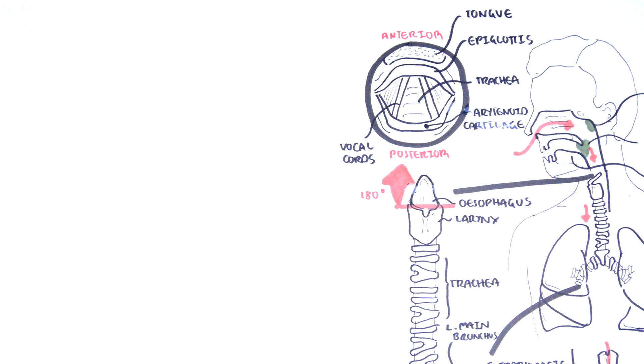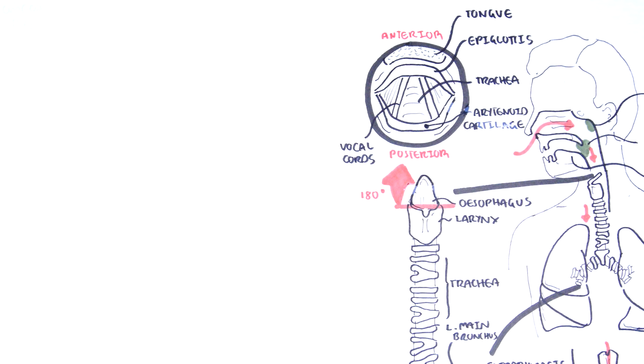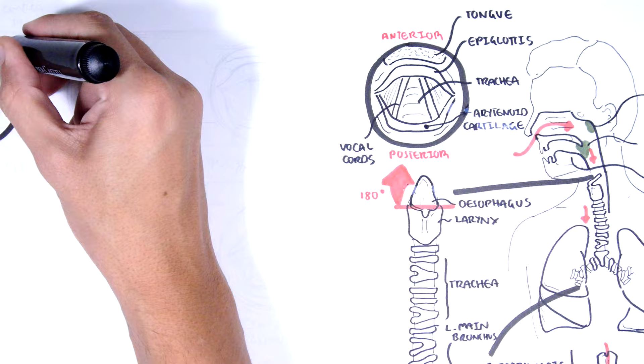Continuing on with the extrathoracic causes of stridor, focusing on the larynx. The larynx, also known as the voice box, is a common site for congenital stridor. Congenital causes of stridor are not acute causes, but rather chronic because it is ongoing.